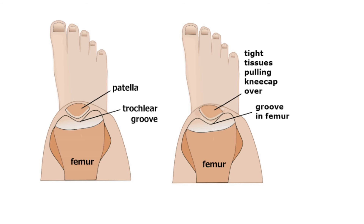There is something important to understand if you are contemplating a lateral release operation: if it is done for the wrong reason, the outcome can be a disaster. A wrong reason might be a tight lateral retinaculum in the absence of a tilted patella, or an unstable patella that tends to intermittently derail from the underlying groove. A lateral release performed for the wrong reasons and without a full evaluation of the patella and its associated anatomy may lead to a worsening of symptoms and a weakening of the quads muscles to the point where the person feels they can no longer trust their knee.